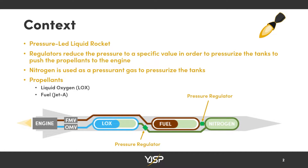For a bit of context, regulators are used on rockets to pressurize their tanks. We have nitrogen here which acts as a pressurant that flows into both tanks and is regulated down to different pressures, which then pushes the fuel and oxidizer into the engine allowing them to combust.